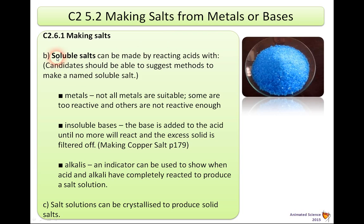This deals with parts B and C from the AQA syllabus. Soluble salts can be made by reacting acids. Candidates should be able to suggest methods to make a named soluble salt. You've got to learn at least one or two of these ideas, because you could get a quality of written communication type question on it.